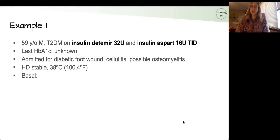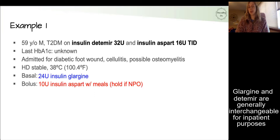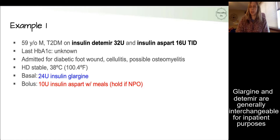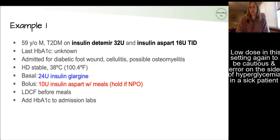For him, it makes sense to start his basal dose a little lower than his home regimen at 24 units of glargine. For his meal dose, we can start a little lower at about 10 units of aspart with meals — holding it if he's not eating, whether by order or due to lack of appetite. We also need to add a correction factor to accommodate if the ordered doses aren't enough to control his sugars, so we'll give a low-dose correction factor before meals. We'll also add an A1C to his admission labs since we haven't had one in the last three months.